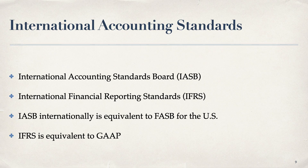Internationally, we have the International Accounting Standards Board, the IASB, instead of FASB. The equivalent of GAAP internationally is called International Financial Reporting Standards, or IFRS. So the IASB internationally is the same as FASB is to the United States, and IFRS is the equivalent to GAAP. We have two systems: U.S. GAAP and IFRS, which is pretty much worldwide.